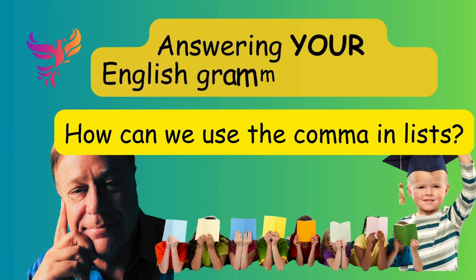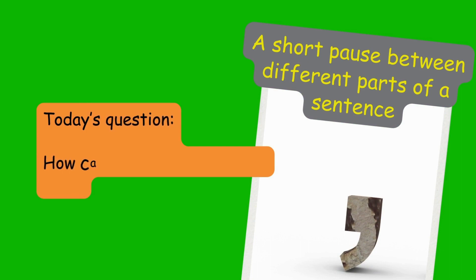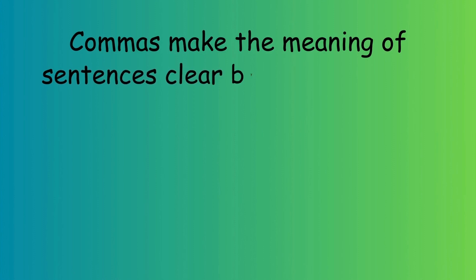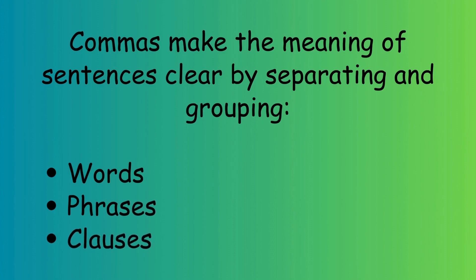Hello and welcome to another edition of Answering Your English Grammar Questions. Today's question: how can we use the comma in a list? A comma, to remind you, is a short pause between different parts of a sentence. Commas help to make the meaning of sentences clear and they do this by separating and grouping words, phrases, or clauses.